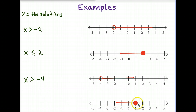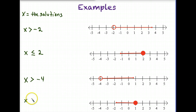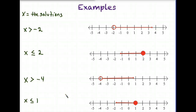In our final example, let's use x to represent our solutions. Our solutions include 1 because the circle is colored in, and they also include all numbers to the left of 1 — 0, negative 1, negative 2, and so on — which are all smaller than 1. So we need all numbers that are less than or equal to 1. That concludes the examples on writing inequalities to represent line graphs. Go ahead and give the practice problems a try.